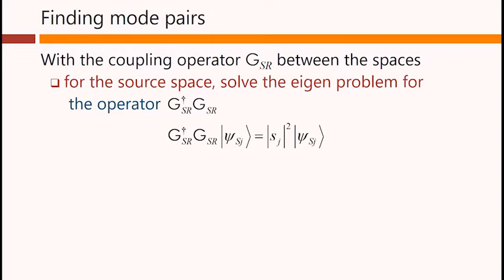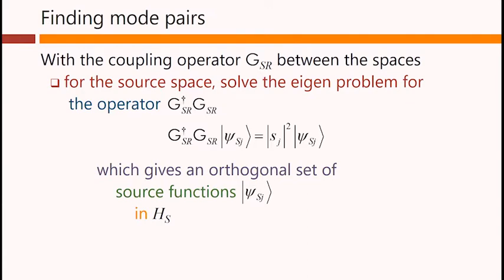So, we solve this eigenproblem for this operator, G dagger sr times GSr. The solutions to this eigenproblem give us an orthogonal set of source functions, so Psi sj in this Hilbert space HS.